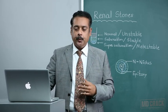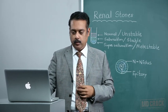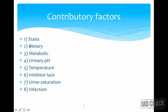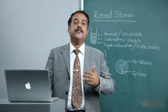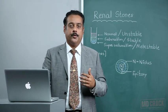This slide outlines the various contributory factors related to stone formation. First and foremost is stasis - simple stagnation of urine. Second is dietary factors, such as lack of peptide factor A or inorganic substances like zinc and magnesium. There are also metabolic factors and changes in urinary pH - some crystals deposit in alkaline urine and some in acidic urine. Temperature changes, inhibitor lag, urinary saturation, and various types of infection also directly contribute to stone formation.